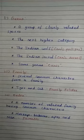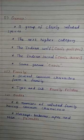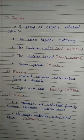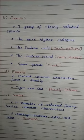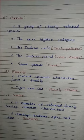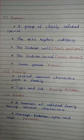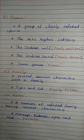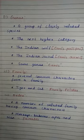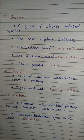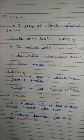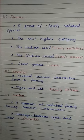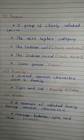The next level is Genus. It is a group of closely related species which constitute the next higher category called Genus. For example, the Indian wolf Canis lupus and the Indian jackal Canis aureus are placed in the same genus Canis.